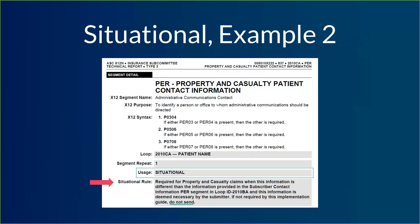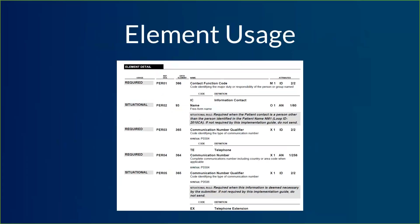Another thing about required and situational — we were looking at all of that on the segment level, but it's also on the element level. This is actually a continuation of that same PER segment, and now we're looking at PER01, PER02, PER03, etc. Next to each one there's a usage. You'll notice some of those usage indicators say required. If you are putting in this PER segment, then you need the required fields. If you are not putting in the PER segment, you don't need anything — you just keep the whole thing blank. So if you start it, you have to finish it. If you put together a segment but don't include the required fields, it's going to be considered incomplete and will probably cause a rejection.